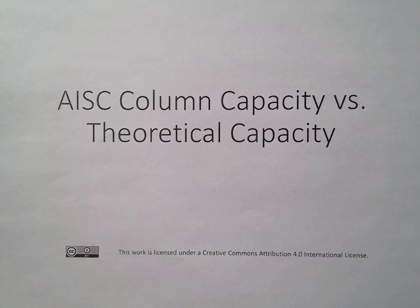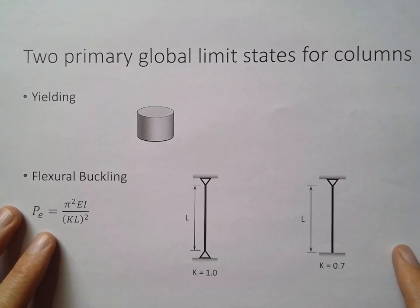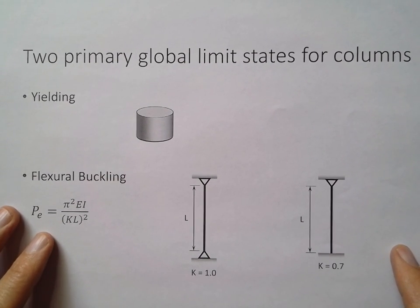With this video, what I want to do is compare the column capacity based on the AISC steel specification to the theoretical capacity under ideal conditions. What I'm talking about here is we're looking at two primary limit states for columns.